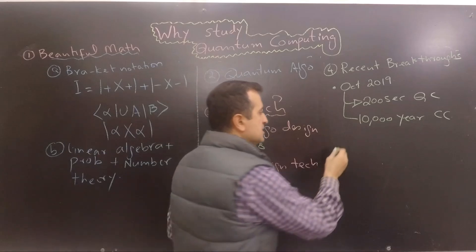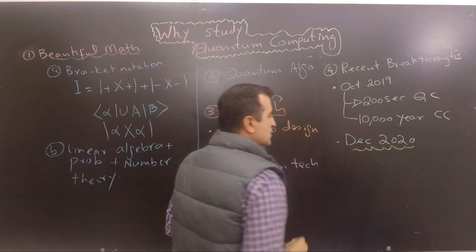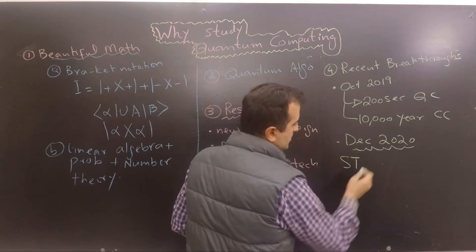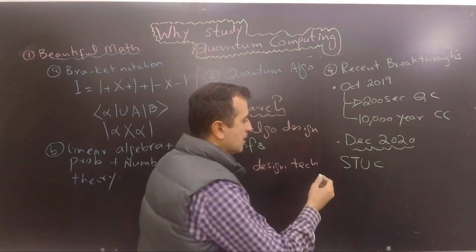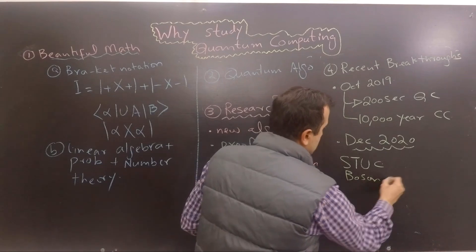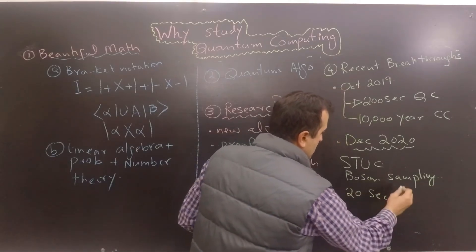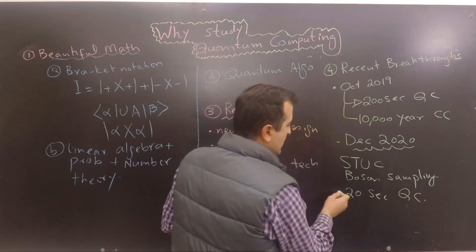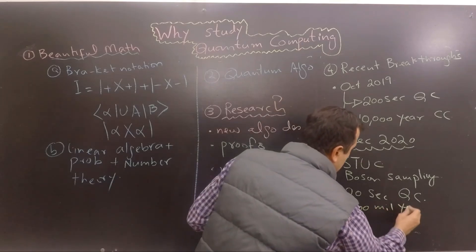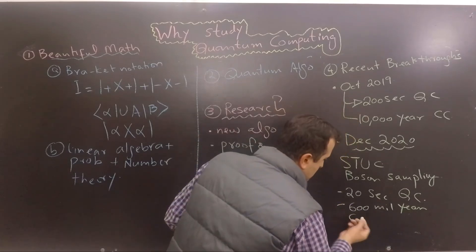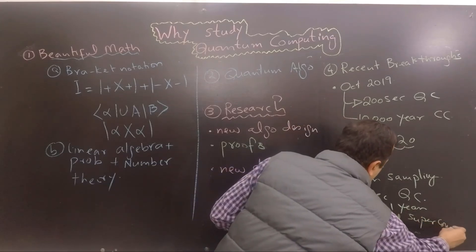And later on in December 2020, a Chinese university, the University of Science and Technology of China, developed a photon-based quantum computer to solve the boson sampling problem in 20 seconds in the light-based quantum computer. The same problem would have taken 600 million years on a classical supercomputer.